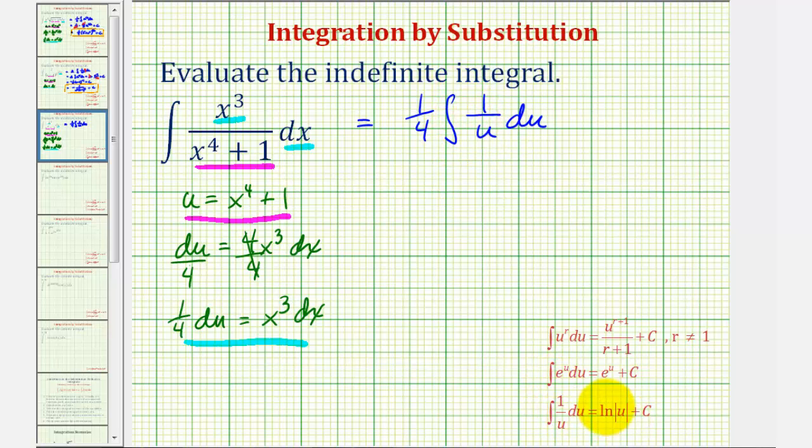Well, the integral of one over u is equal to natural log absolute value u plus c. Which means we would have one fourth natural log absolute value u plus c.